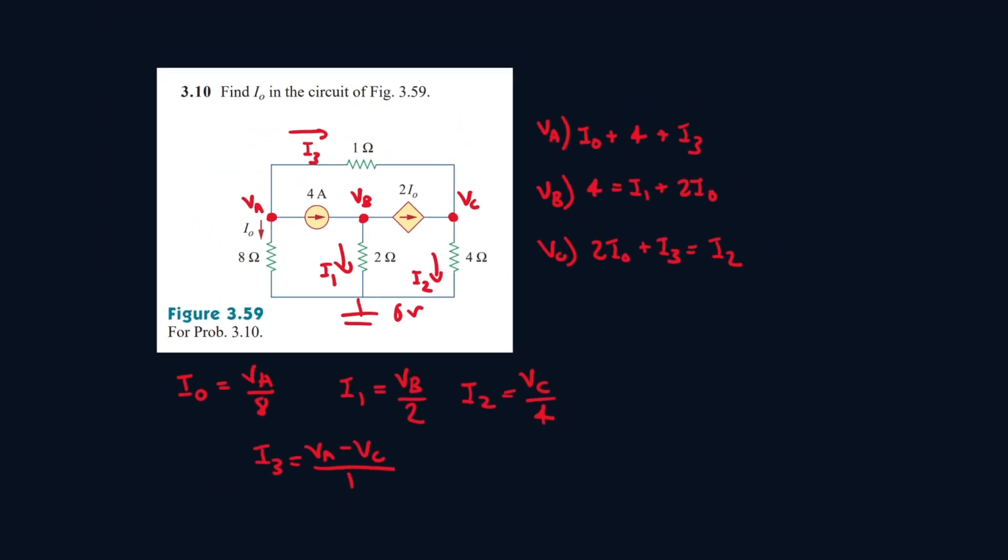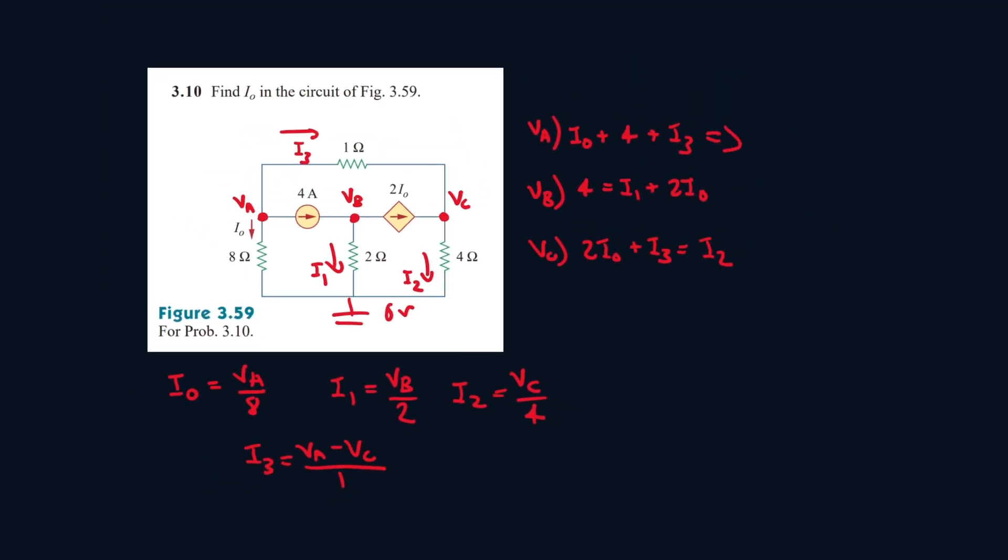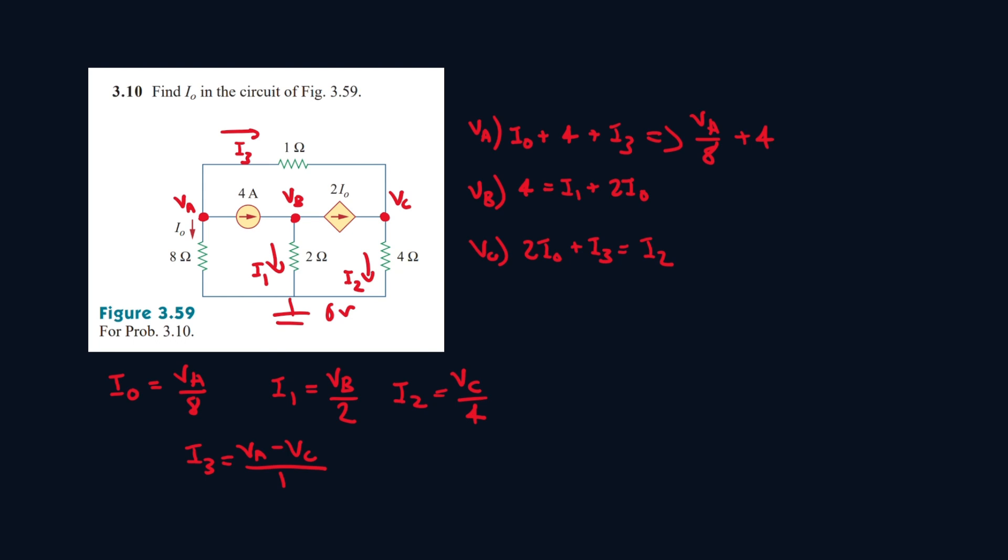So let's plug it in into our equations. IO is VA over 8 plus 4 plus I3, which is VA minus VC. And for our second equation, it's 4 equals I1, which is VB over 2, plus 2IO, which is 2VA. Sorry, IO is VA over 8, so it'll be 2VA over 8.